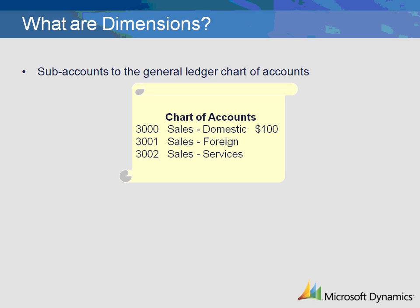Dimensions are sub-accounts to the General Ledger Chart of Accounts. They allow an account to be broken down into additional detail for reporting and analysis.